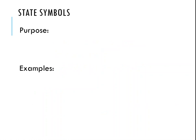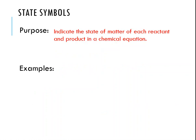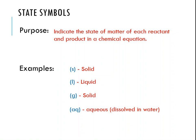State symbols are symbols used to tell us what state of matter a particular reactant or product is in at a particular temperature. There are four main state symbols: (s) indicates solid, (l) indicates liquid, (g) indicates gas, and (aq) means aqueous — something dissolved in water, as we mentioned in unit three.